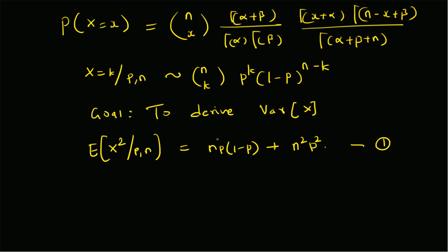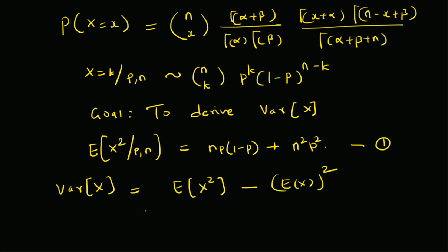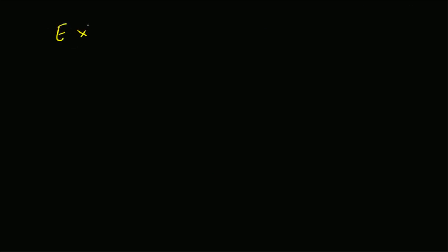Using this information, the variance of X is given by its second moment E[X²] minus the square of the mean (E[X])². From a previous video, we already know the mean is n times α divided by (α+β). So we just need to derive the second moment E[X²].